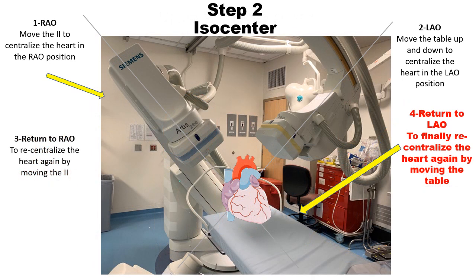Finally, we return to the LAO position to re-centralize the heart in the LAO position by moving the table up and down. After these four steps, we are now sure that the heart is in the isocenter of the two radiation beams.